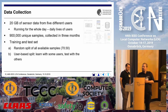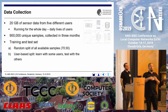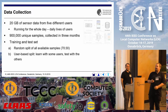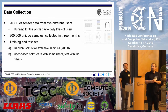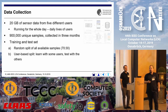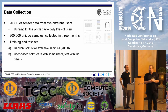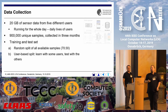The data we collected consists of 20 gigabytes from five different users. We told them to let the application run for the whole day to get actual data from daily lives rather than artificial lab data. We came up with 900,000 unique samples collected across three months. We split them in two variants: the first by randomly splitting — 70% for training and 30% for testing — and the second user-based, learning from four users and evaluating against the fifth, to test generalization across different users.